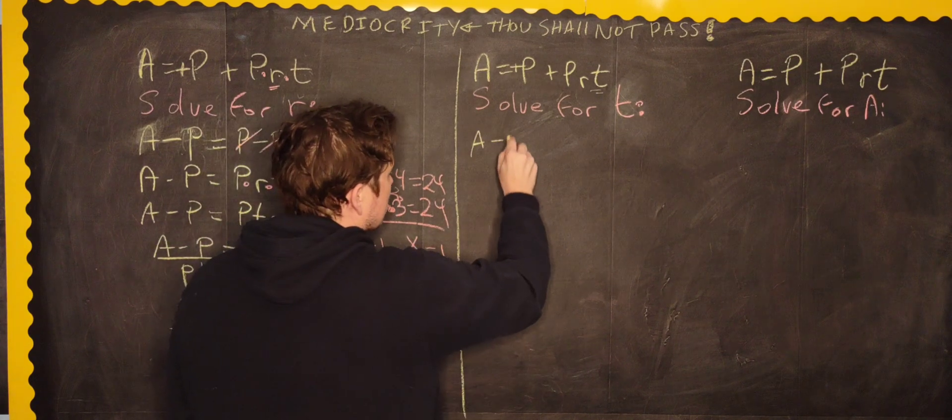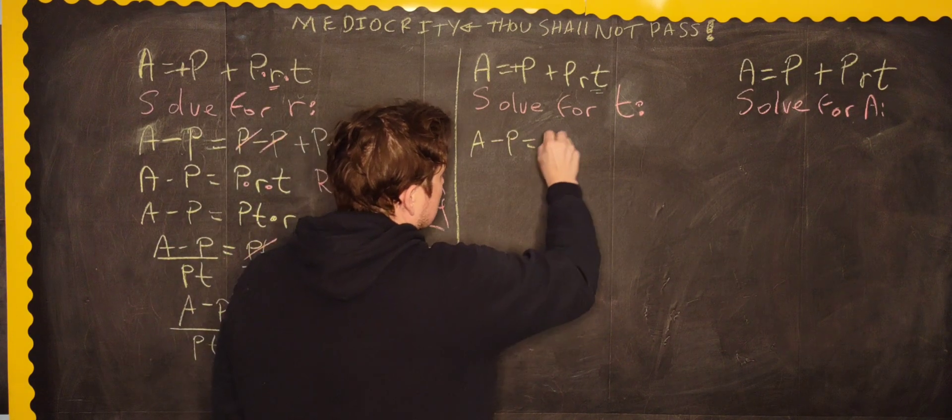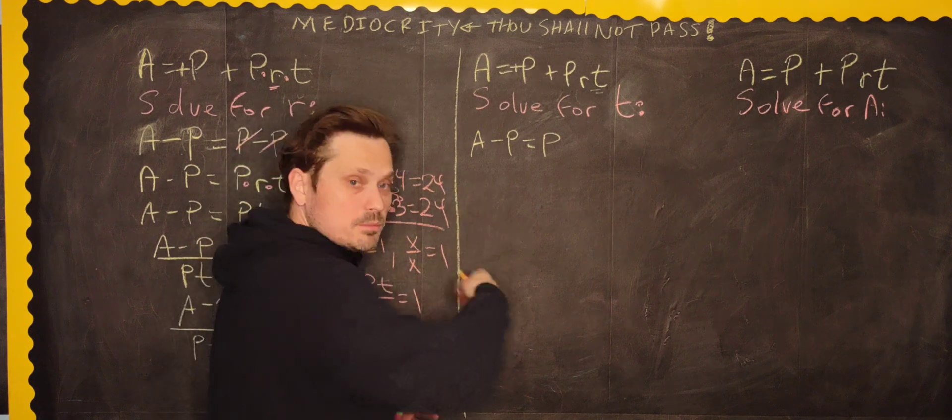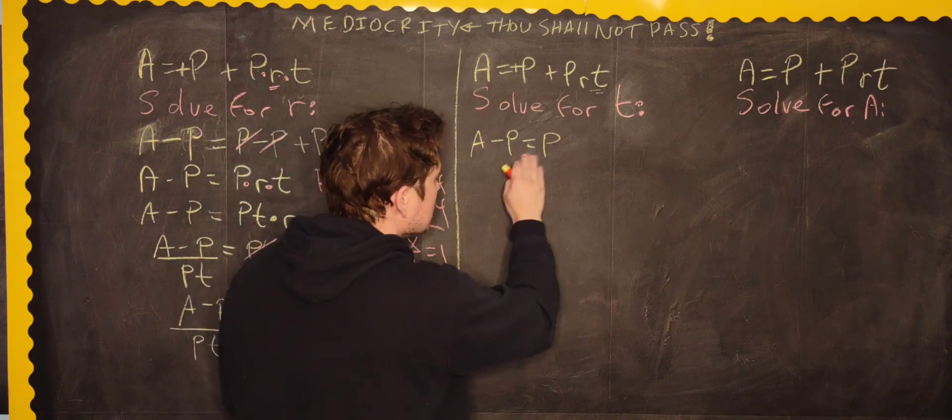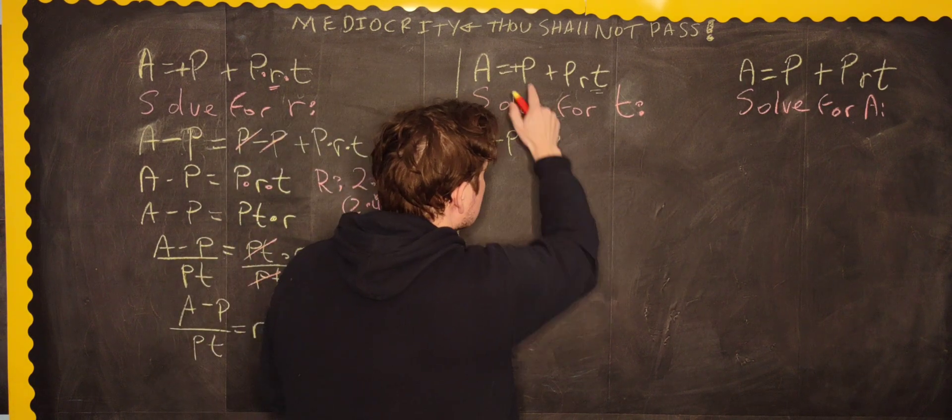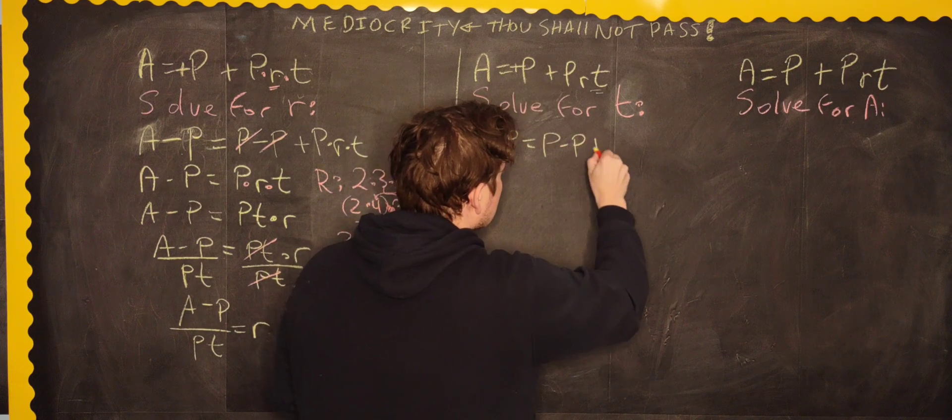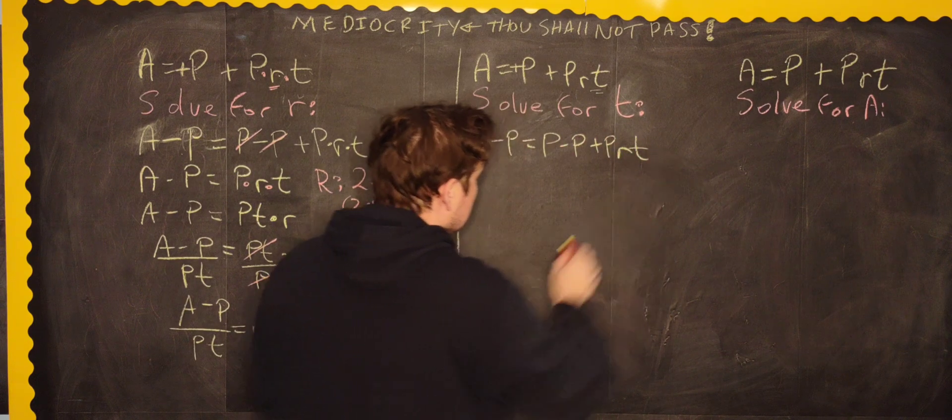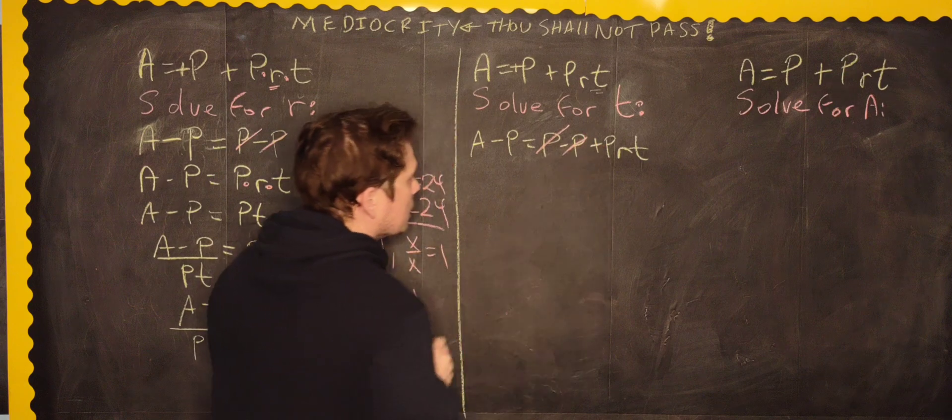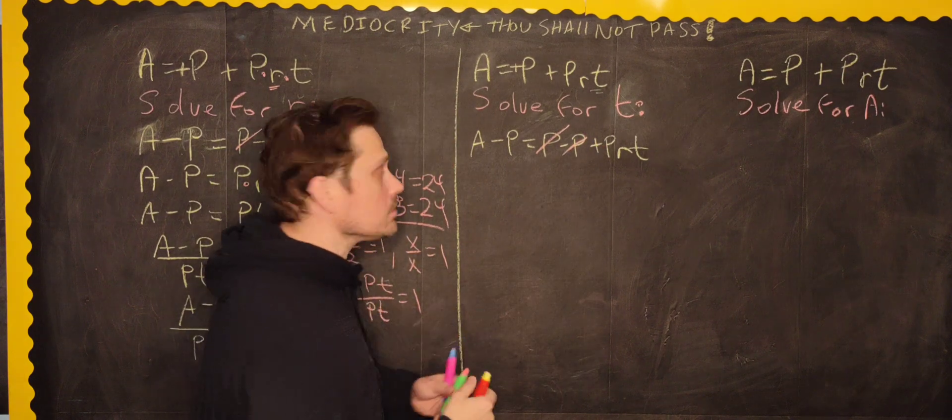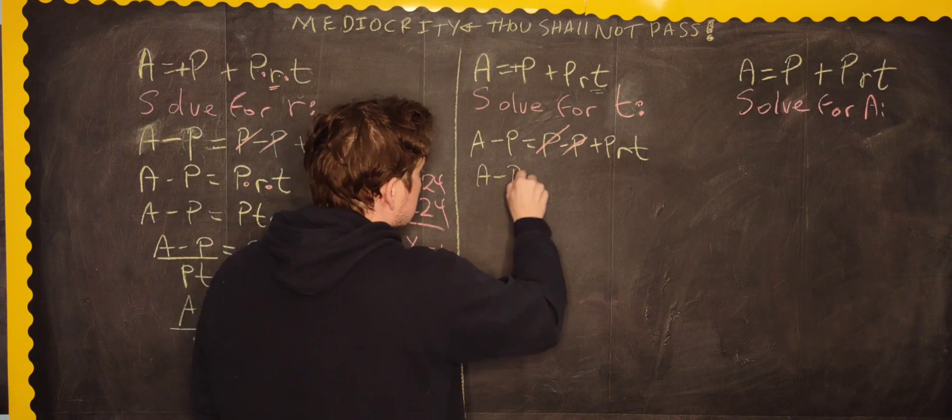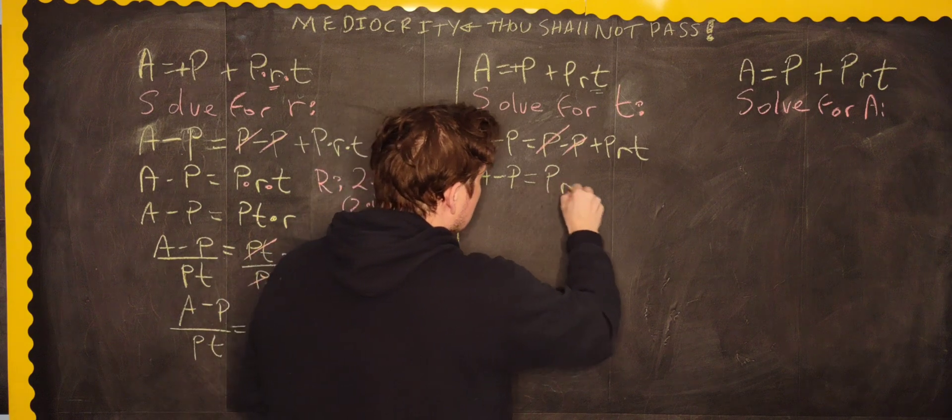So, again, you can do A minus P is equal to, if you want it to be very formal, you've got to subtract P from both sides. So, it's A minus P equals P minus P plus PRT. And as before, these two cancel off. They become a zero. So, you just have A minus P is equal to PRT.